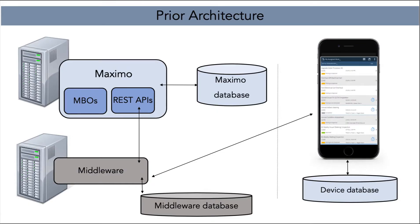Let's jump right in and start by reviewing the architecture. One of the best ways to highlight the new features is to compare it to the existing architecture, meaning Anywhere 7.6.3 and prior versions. That architecture is shown here. At the very top, we have our Maximo Asset Management infrastructure, and you can see that Maximo is then communicating with a middleware component.